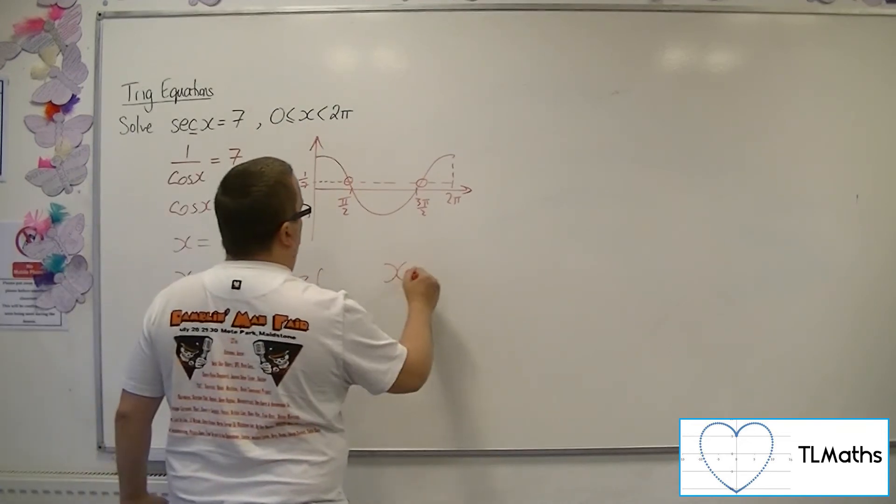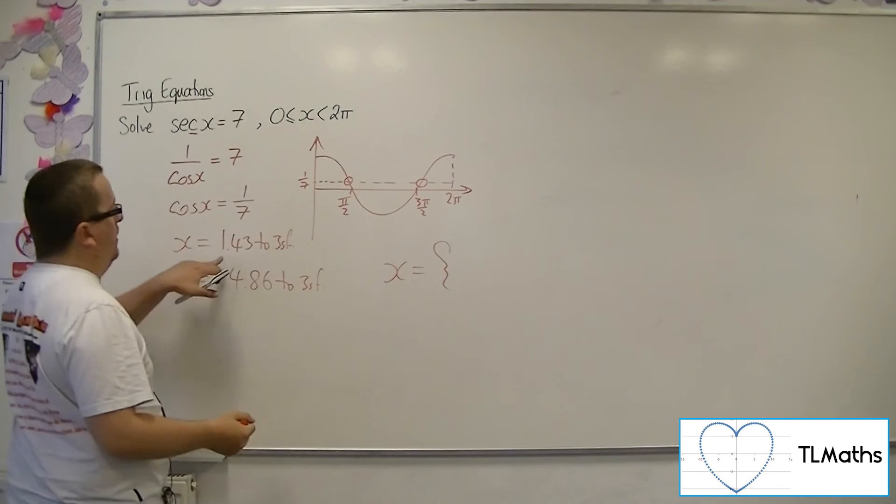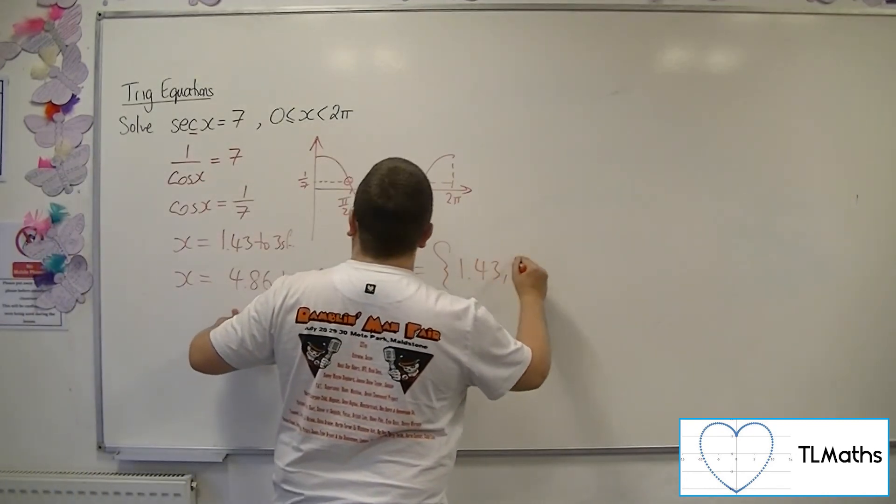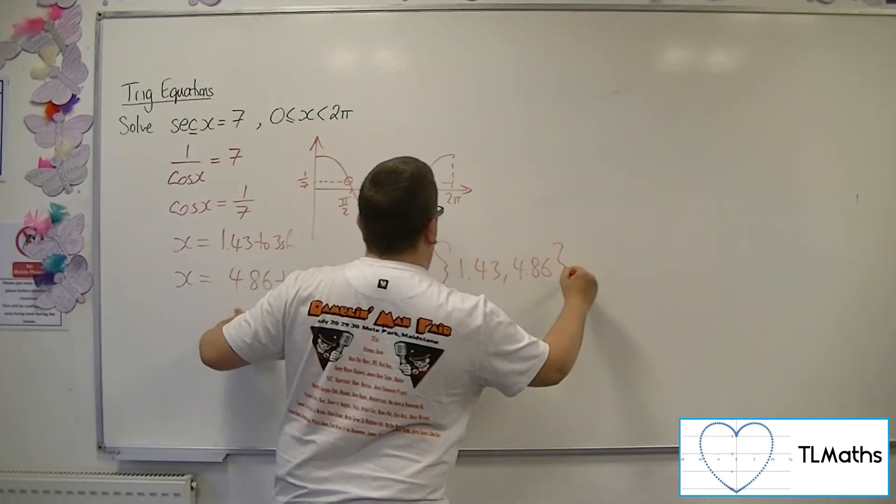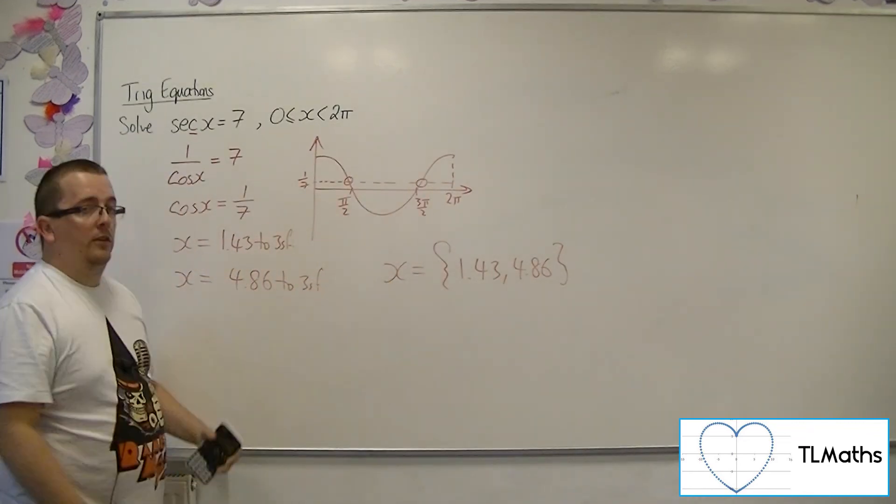So your two solutions to the original problem are 1.43 and 4.86 to three significant figures.